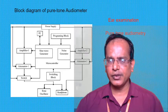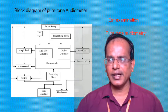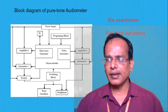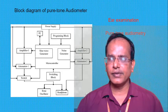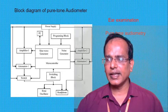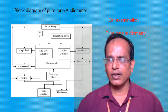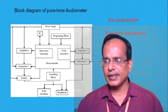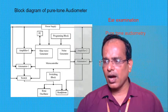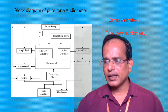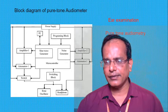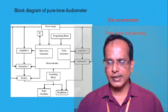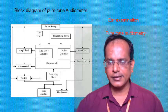Frequency is cycles per unit of time and is the perceptual correlate of pitch. Frequency is measured in Hertz (cycles per second). Frequencies of 250 to 8000 Hz are used in testing because this range represents most of the speech spectrum, although humans can detect frequencies from 20 to 20,000 Hz, and some children can detect even higher frequencies.